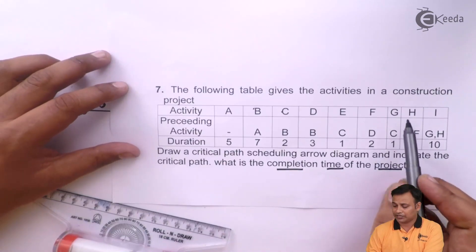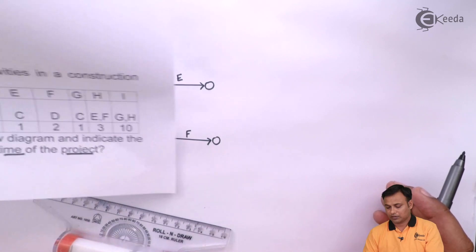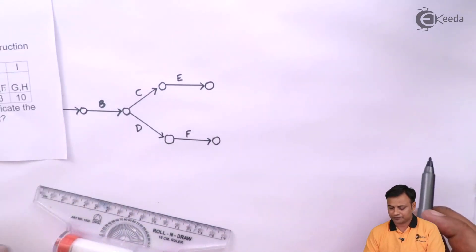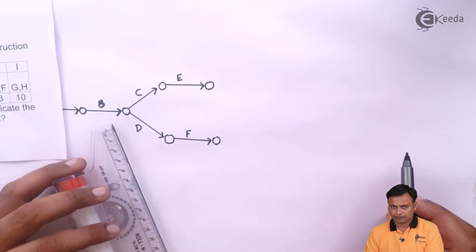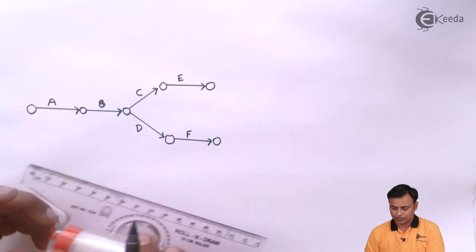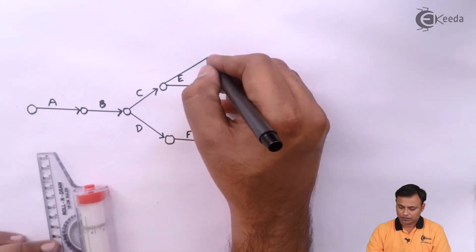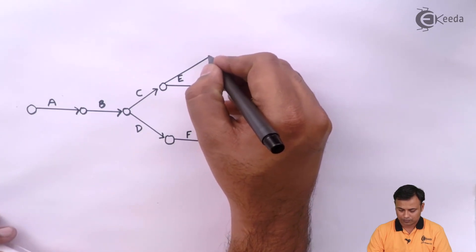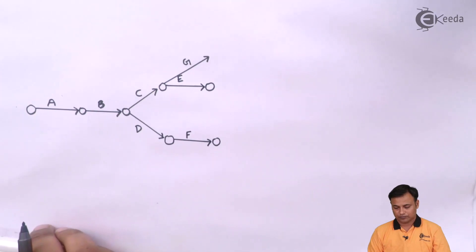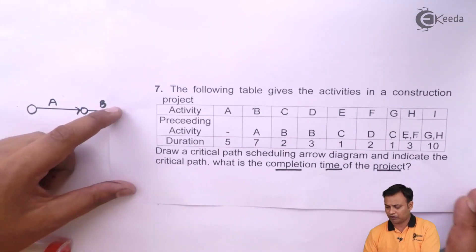After C we also have G, so we need to join E and F. Activity G I will draw upwards because I need to join E and F. Drawing a network diagram is all trial and error — you need to practice, draw it in rough format first, and then produce a fair answer.